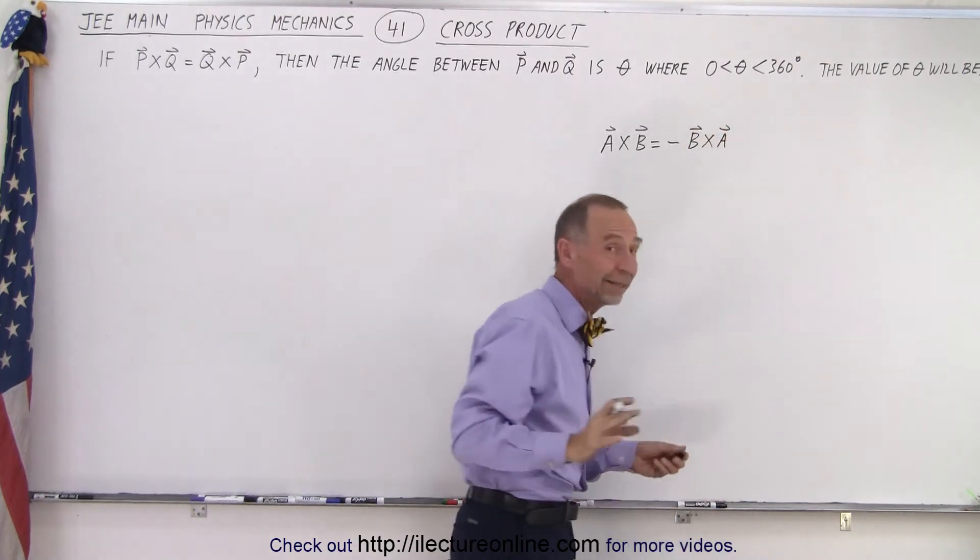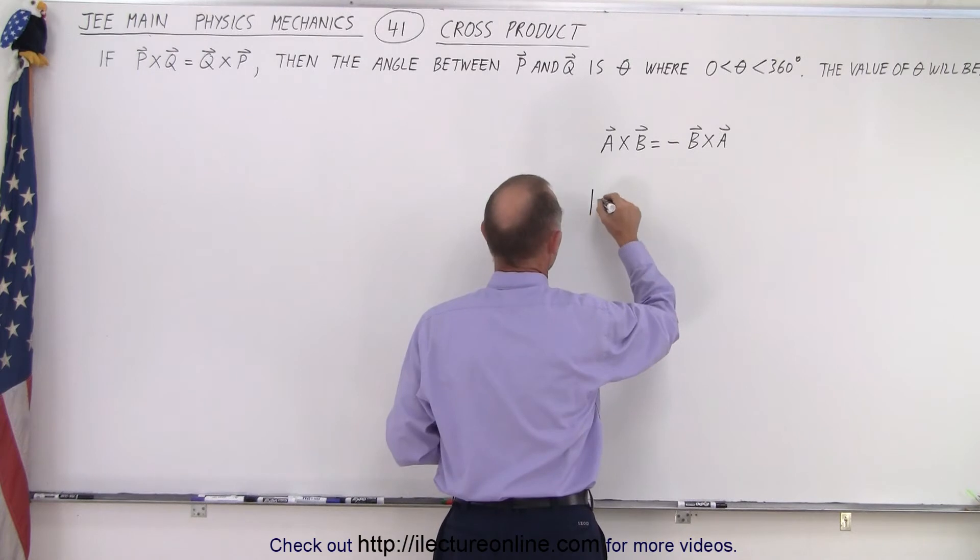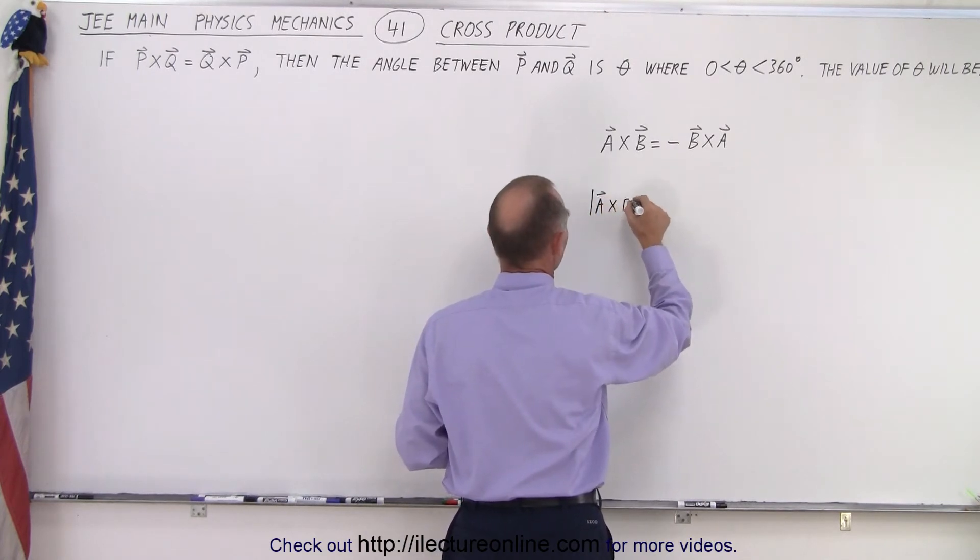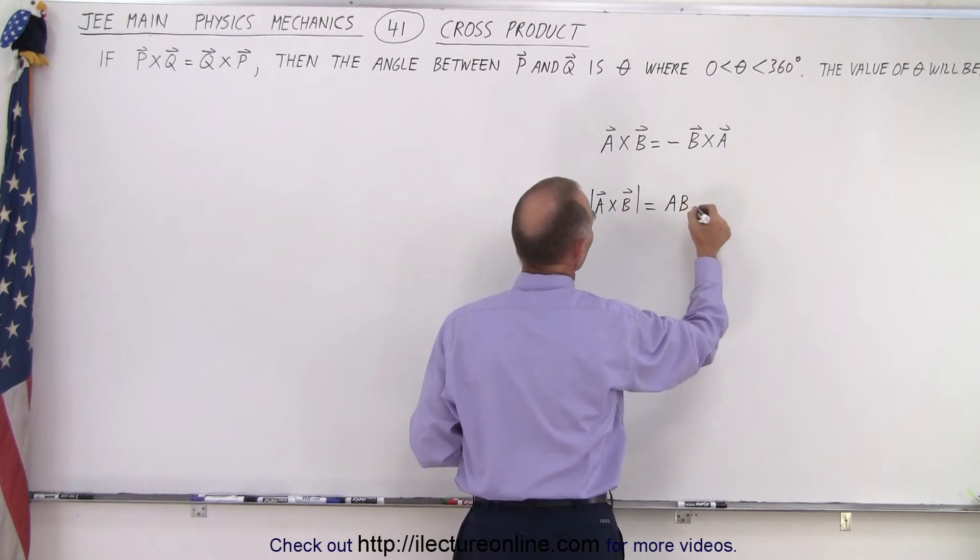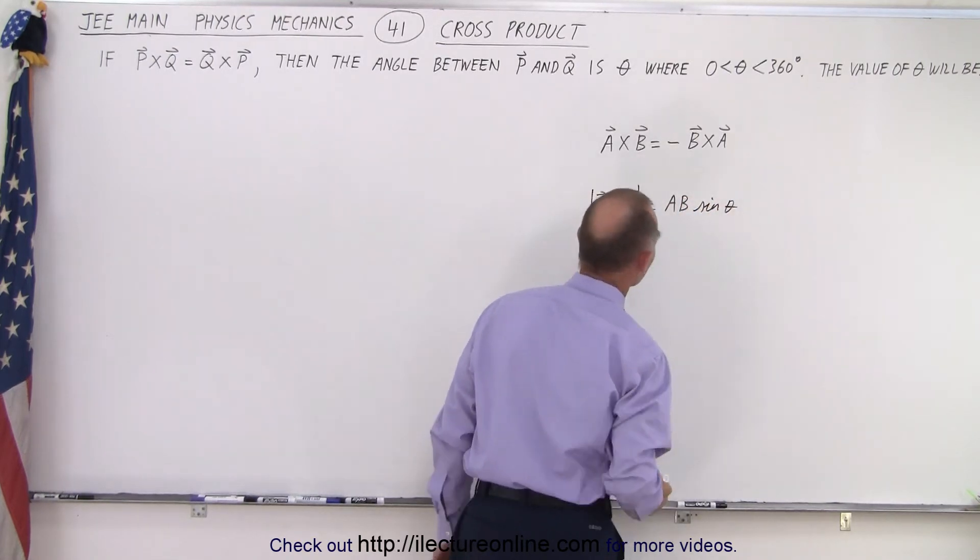The magnitudes will be the same because the magnitude of the cross product, A cross B, is simply equal to the magnitude of A times the magnitude of B times the sine of the angle between them.